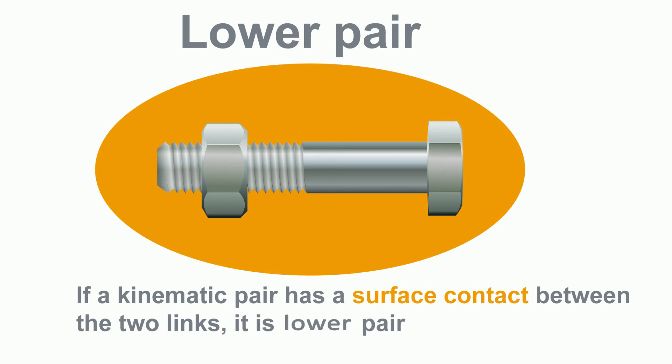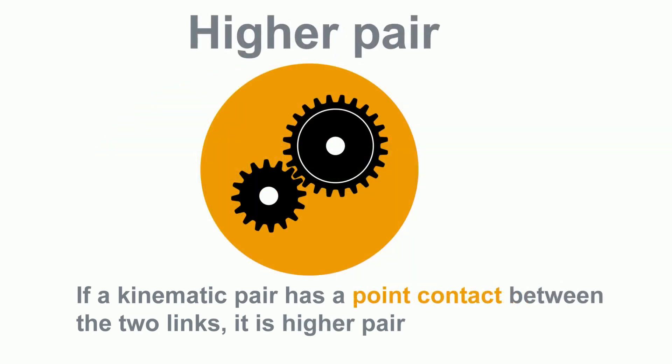Seven, if the relative motion between the links consists of surface contact, it is termed as lower pair. And if it is a point or line contact, it is a higher pair. The example for the lower pair is all of the parts that we have seen till now.